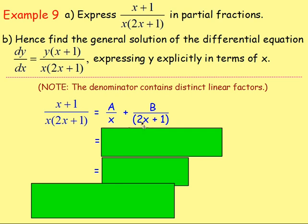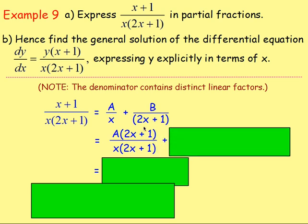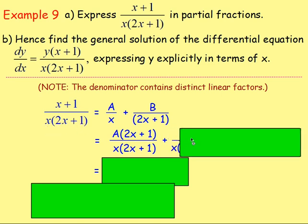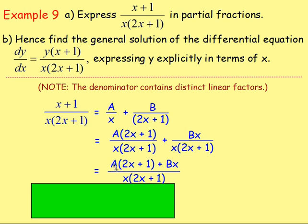We need the same denominator. a is over x, but we need it over x(2x plus 1), so we're missing (2x plus 1) — multiply the numerator and denominator by (2x plus 1). b is over (2x plus 1), but we need it over x(2x plus 1) — multiply the top and bottom by x. The denominator is now the same, so we can add the numerators, giving a(2x plus 1) plus bx over x(2x plus 1).